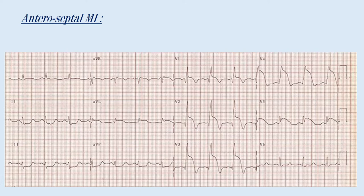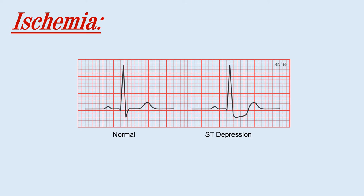This is an example of anteroseptal MI, where there is an ST elevation in V1, V2, V3, and V4. In cases of ischemia, the ECG is characterized by an ST depression in the leads affected.